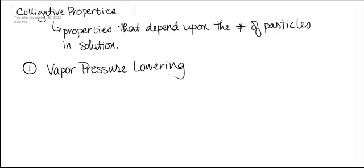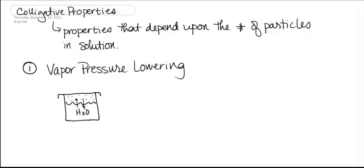We've already talked about vapor pressure in the last chapter. If we have a beaker of water and we close it up with a lid, at some point the water starts evaporating and we get gas particles. Eventually we reach an equilibrium where some of those gas particles condense back into liquid form, and therefore a vapor pressure develops.